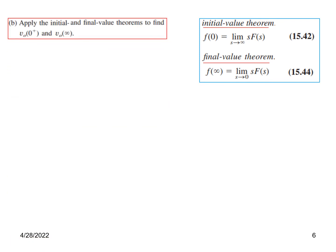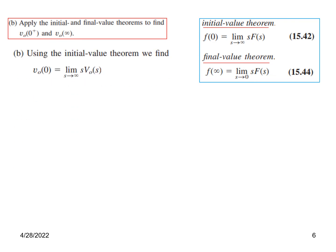The next question asks us to apply the initial and final value theorems to find V0(0+) and V0(∞). From Chapter 15, the initial value theorem is: f(0) equals the limit as S tends to infinity of S·F(S), and the final value theorem is: f(∞) equals the limit as S tends to 0 of S·F(S). We need to calculate the value of V0 using these.